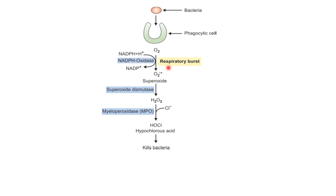In the respiratory burst, there is synthesis of superoxide radical. If there is a deficiency of NADPH oxidase enzyme, it leads to chronic granulomatous disease. In chronic granulomatous disease, the phagocytic cell can engulf bacteria but cannot kill them, due to deficiency of NADPH oxidase, ultimately affecting the synthesis of hypochlorous acid.